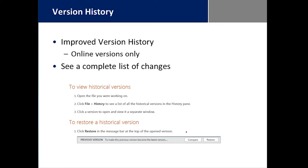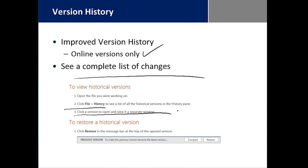We have a greatly improved version history for the online versions. You always have version history in any installed version of Microsoft Office so you can roll back, but sometimes it wasn't clear what you were rolling back to. In this improved version history for the online version, you get to see a complete list of changes under File History. You select the version you want to open, it opens in a separate window, and you can see a side-by-side comparison of differences or choose to restore.